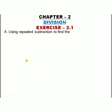Section A: using repeated subtraction to find the quotients. The first problem is 27 divided by 9. What we need to find out here? Quotient.